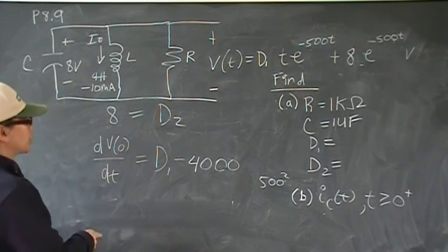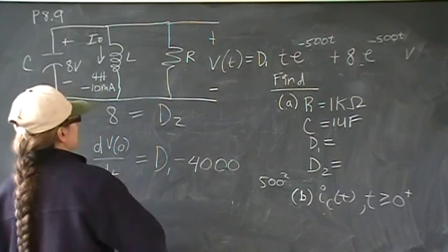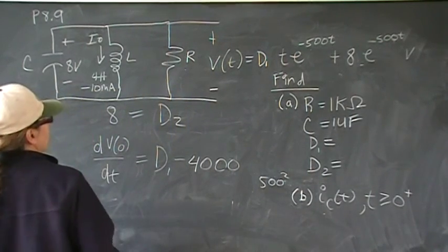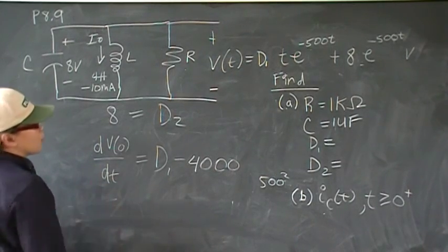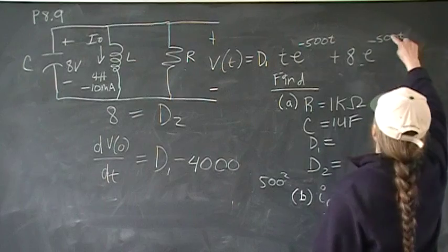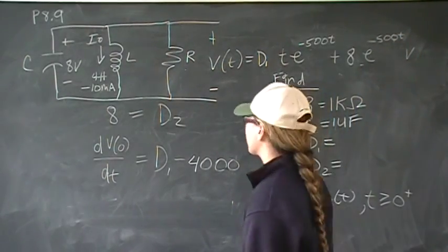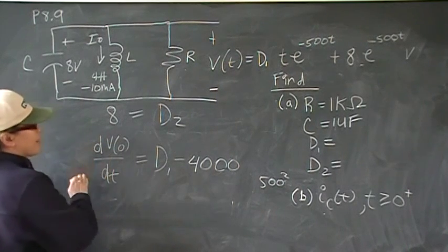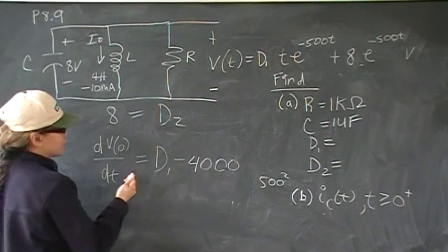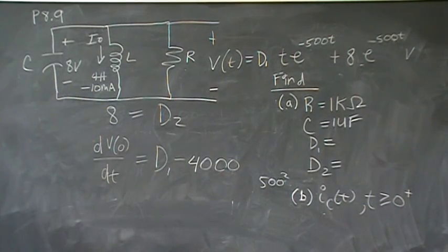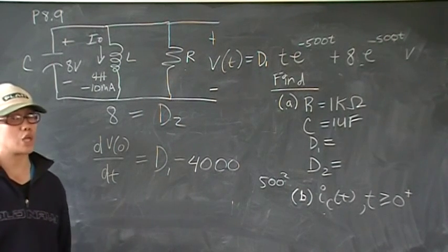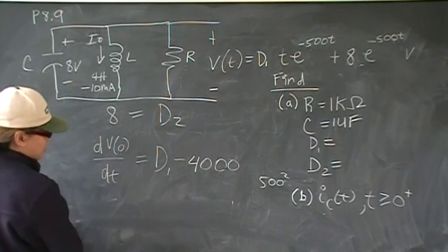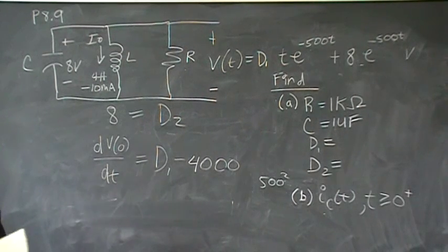So what is dV/dt? I'm going to save you some trouble. At first, I tried to take the derivative of that. You do a simple product rule, and then evaluate it at time 0. Because when you do that, you end up with just D1. Once you do all that and you reduce it, you end up with D1. You take the derivative, evaluate it at time 0, you end up with a statement of D1 minus 4,000 is equal to D1 minus 4,000, which is a true statement, but not useful at all.